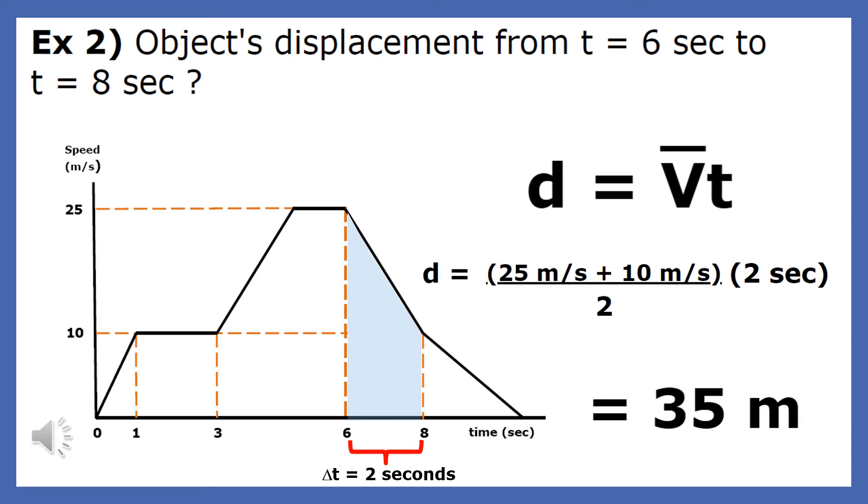The average of the initial and final velocity, which is 25 and 10, is 35 divided by 2, which is 17.5. If we take that answer and multiply it by the change in time during that interval, which is 2 seconds, we get the displacement of 35 meters.